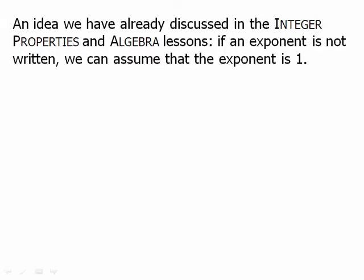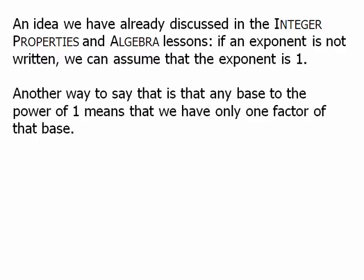An idea we have already discussed in the integer properties and algebra lessons: if an exponent is not written, we can assume that the exponent is 1. We talked a little about this in prime factorizations, and we talked about this again in the algebra module. Another way to say that is any base to the power of 1 means that we have only one factor of that base. So 2^1 is 2. 2 squared is 4. 2 cubed is 3 factors, so that's 8. So again, we're using the exponent as a way to count the number of factors we have in the total product.